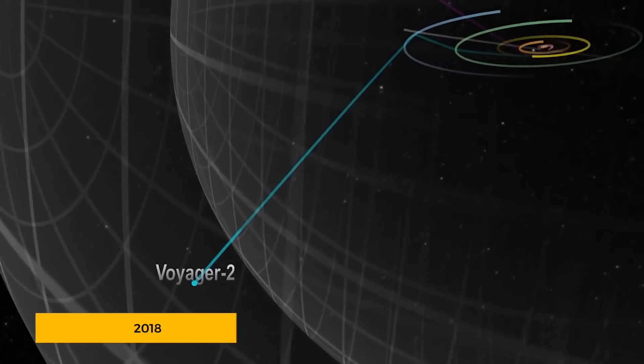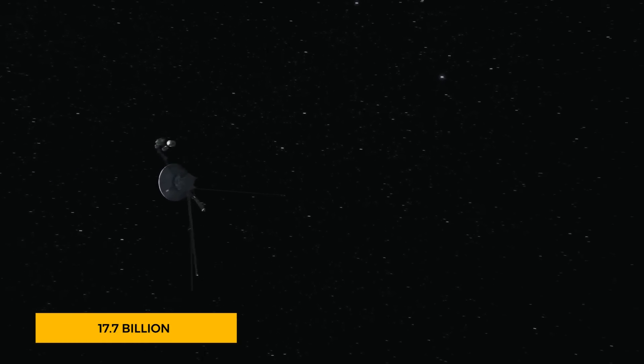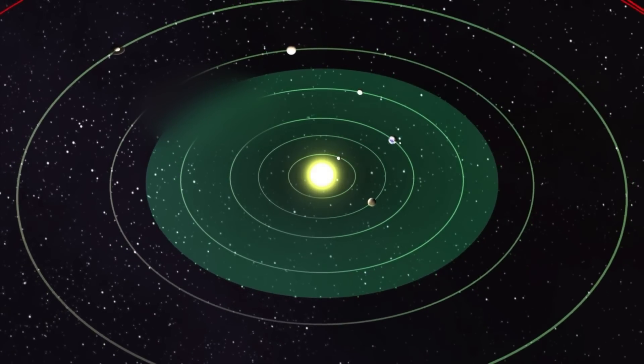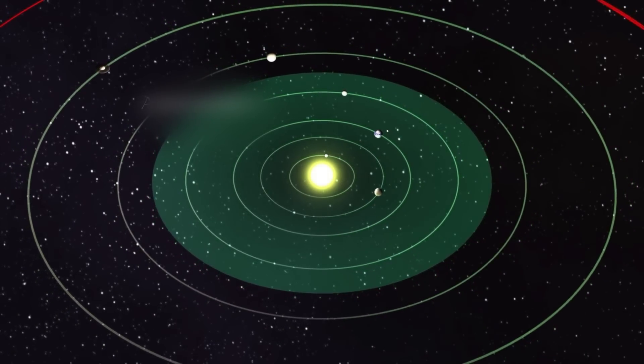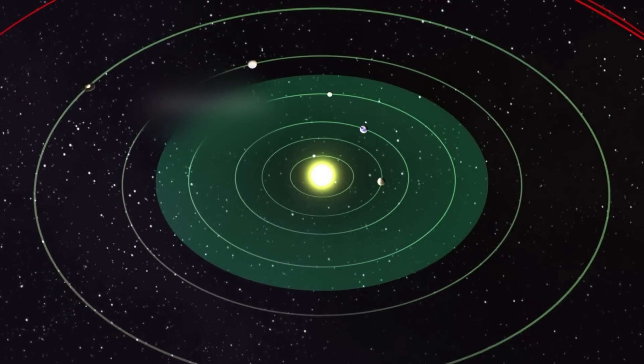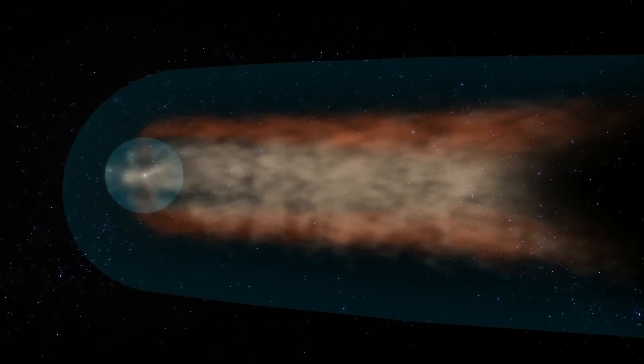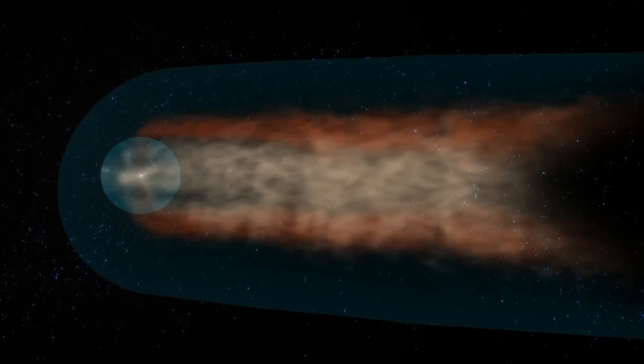By 2018, Voyager 2 had followed suit, entering interstellar space from a staggering 17.7 billion kilometers away from the Sun. These pioneering spacecraft became the first to journey beyond our solar system, uncovering secrets about the interaction between the interstellar medium and the solar wind, the continuous stream of charged particles from the Sun.